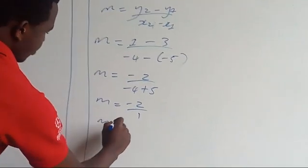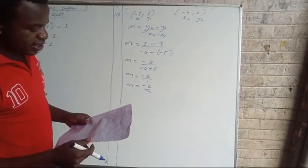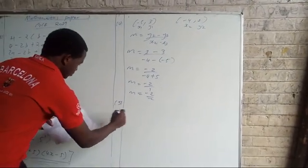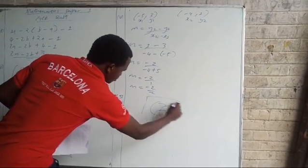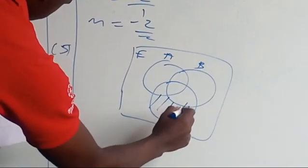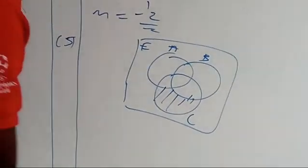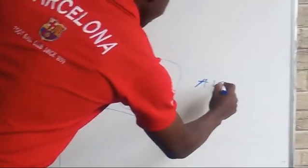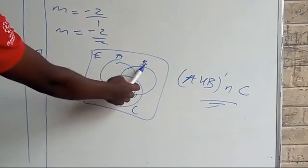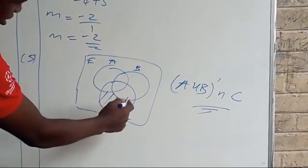Question five: the Venn diagram below shows three sets A, B, and C. The question reads: use set notation to describe the shaded region. The shaded region means (A ∪ B)' ∩ C. Since the set A and set B are not shaded, this means A union B complement, intersection C. This part is the one that is only shaded.